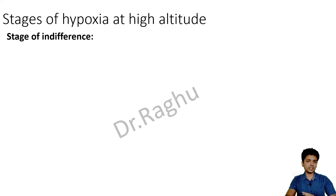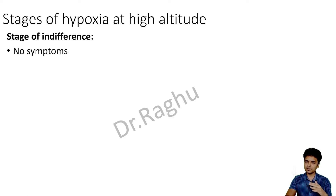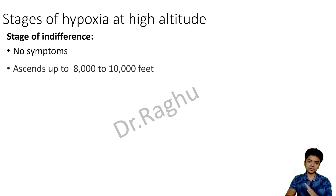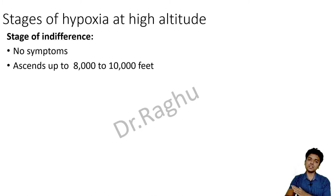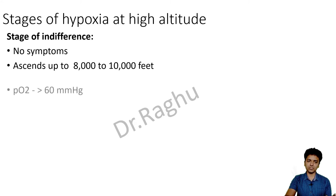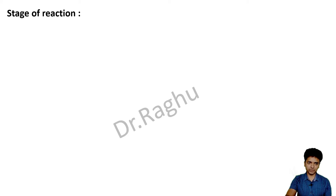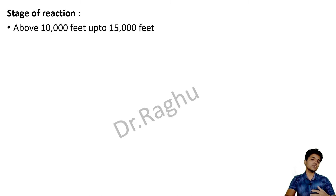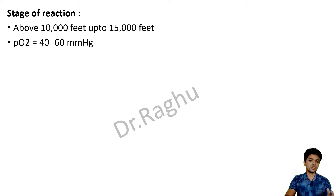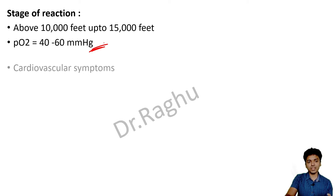The stages of hypoxia at higher altitude depend on altitude level. There is a stage of indifference — no symptoms — when a healthy person ascends up to 8,000 to 10,000 feet, because partial pressure of oxygen is still maintained above 60 mmHg. Then there is a stage of reaction from 10,000 to 15,000 feet, where partial pressure of oxygen falls to 40–60 mmHg.